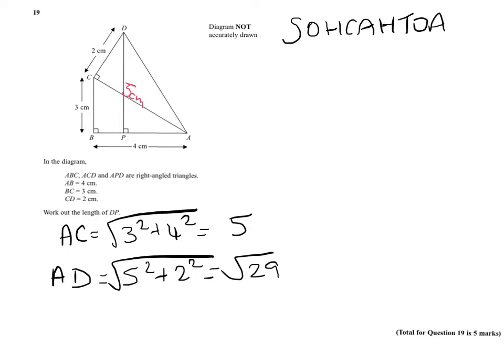We need to first of all work out this angle so that we can use it in the triangle. Now, we know that opposite over adjacent is tan, so for the angle here, we can say that tan of the angle is equal to opposite, which is 3, over 4.